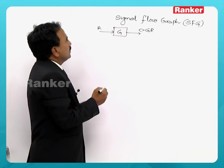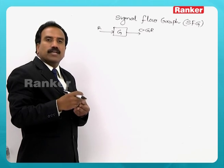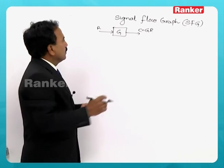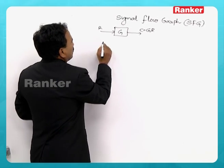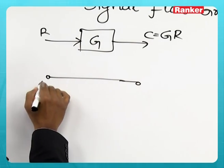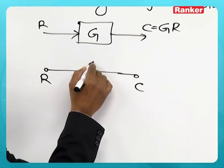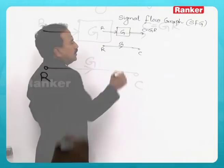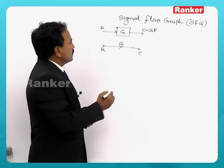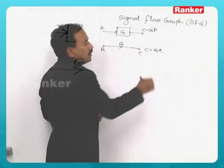In the case of signal flow graph, you will not find any blocks or summing points — it has only arrows. This same system can be represented as R and C with an arrow, where G is the gain of that particular path. The output here is also C equals G times R.